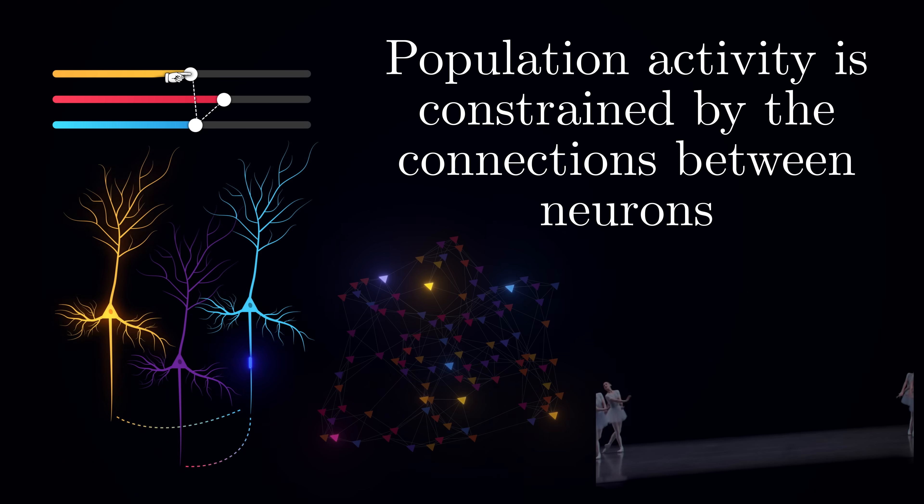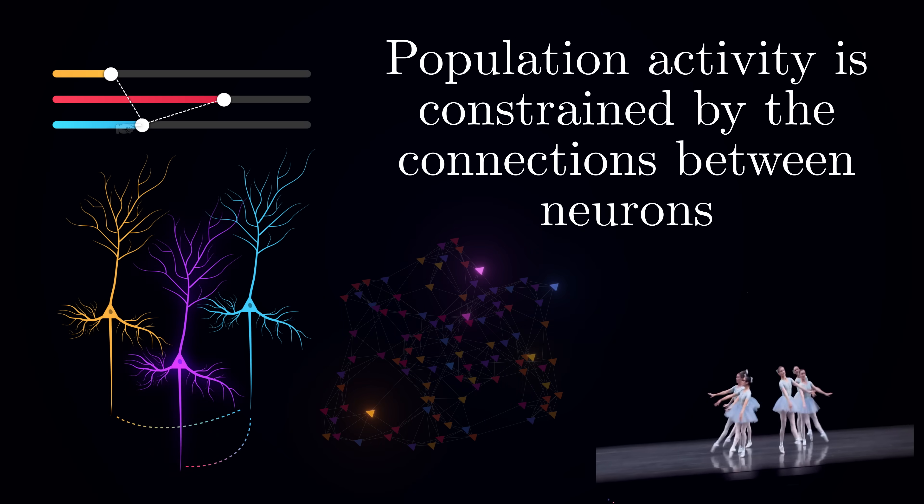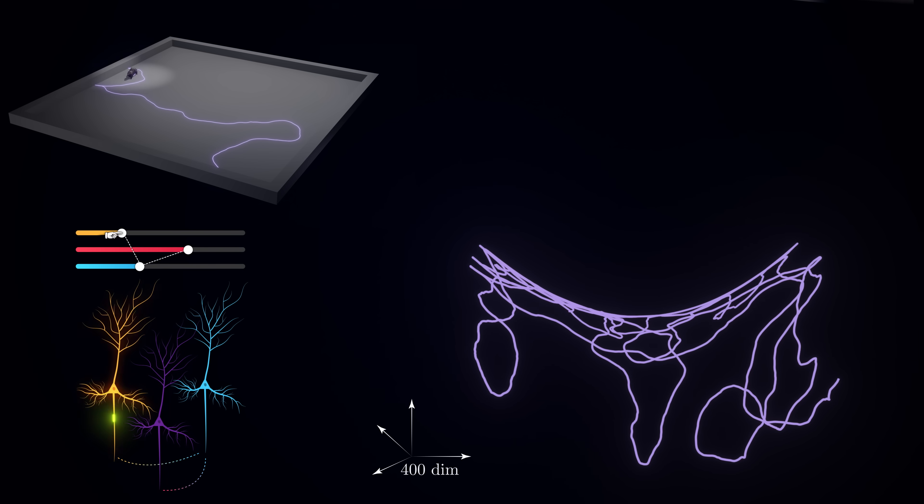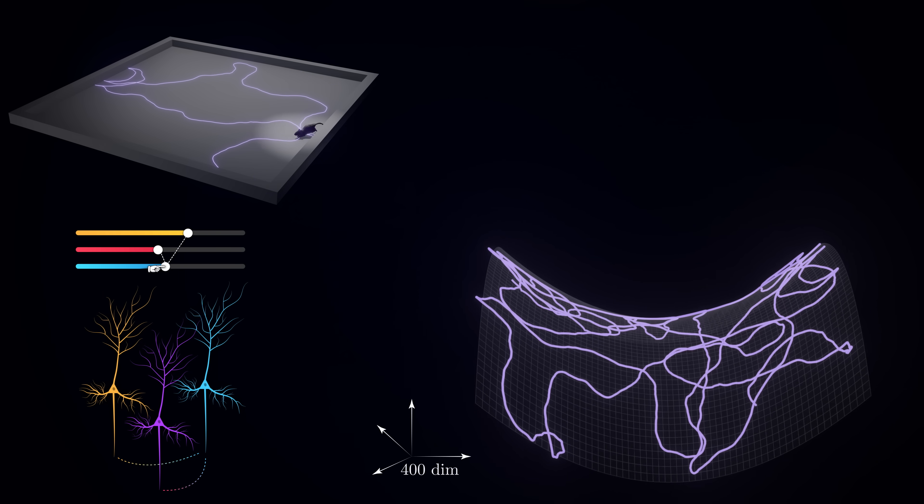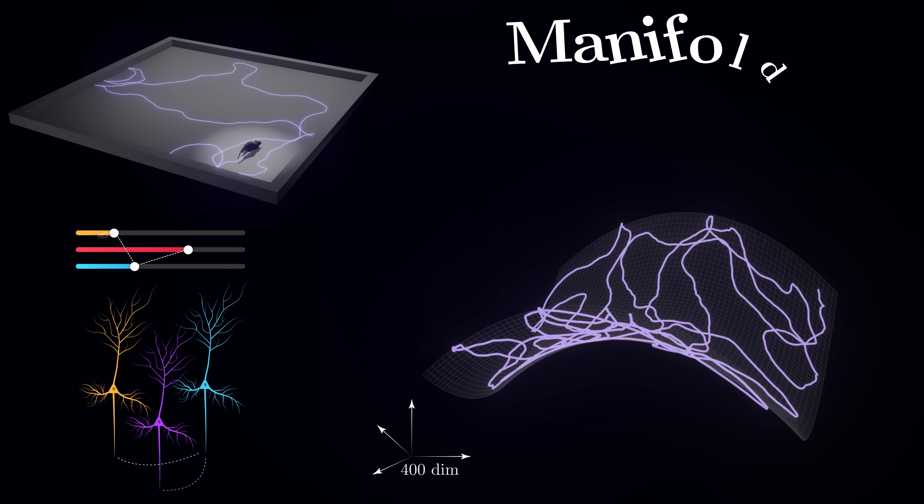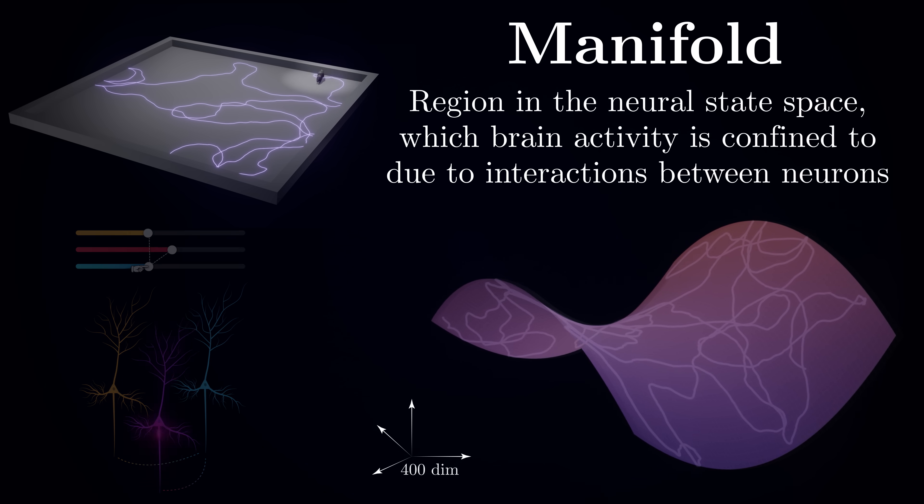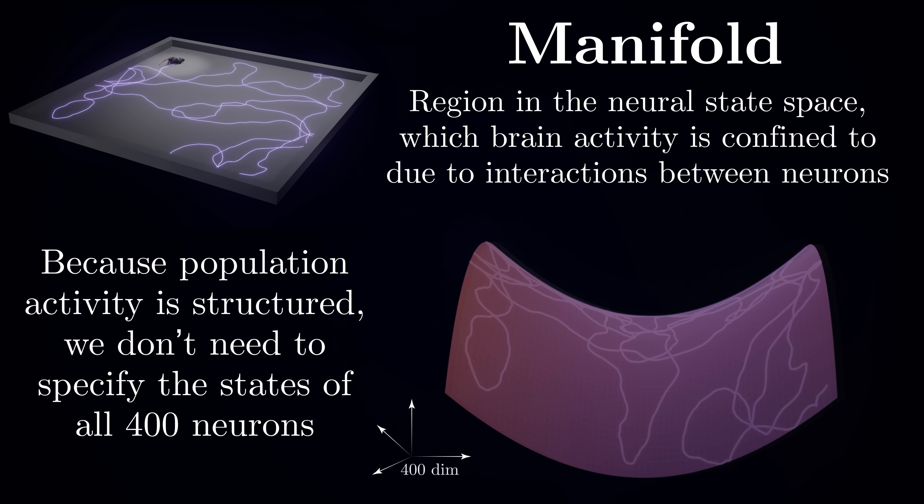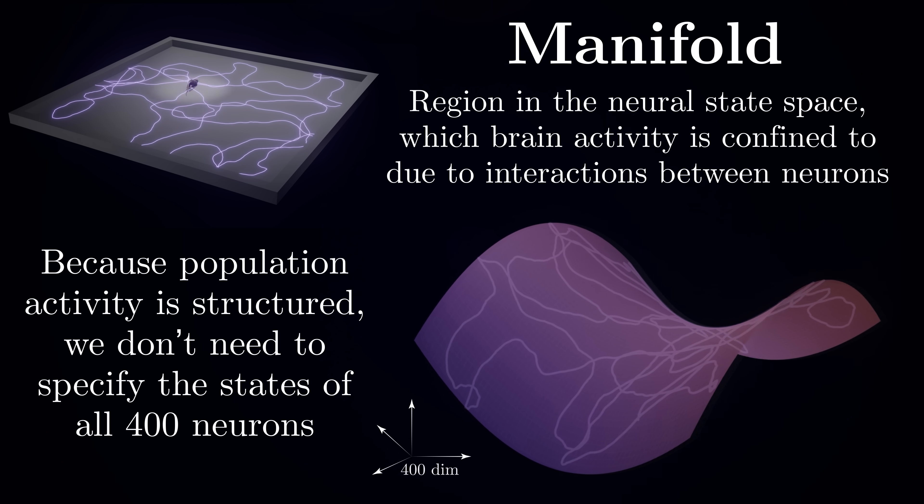It's like a complex dance where dancers' movements are coordinated. While each dancer could theoretically move anywhere, the choreography restricts them to specific patterns. In terms of population activity, this means that the brain's dynamics is confined to a specific region in this vast 400-dimensional space called a manifold. But how can we describe this manifold in such a high-dimensional space? While 400 coordinates might seem overwhelming, the structured nature of neural activity works in our favor. The patterns we observe can actually be described with far fewer numbers than 400.